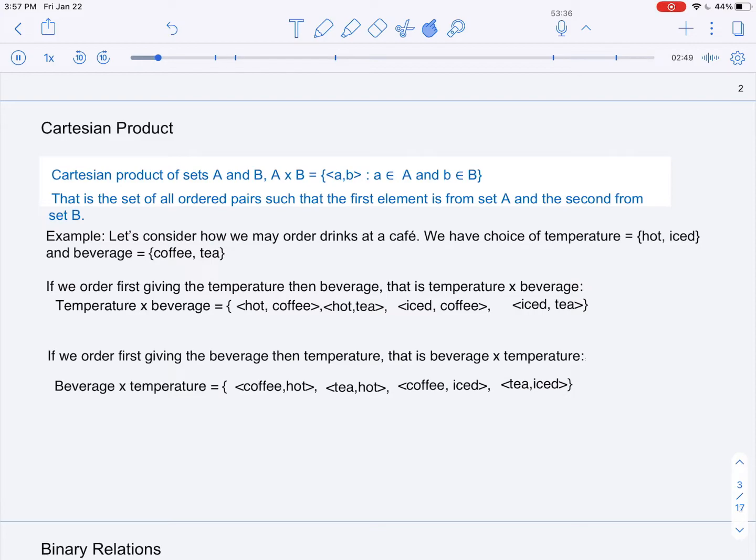In order to see what this looks like and to enforce the idea that in sequences and ordered pairs, order indeed matters, let's consider how we can order drinks at a cafe. We have two sets. The first set is our choices of temperature: hot or iced, and the beverages are coffee or tea.